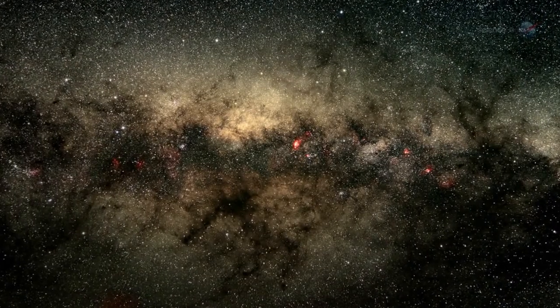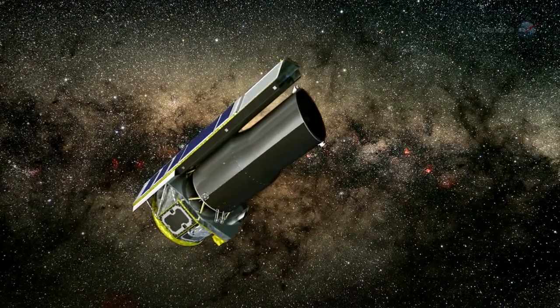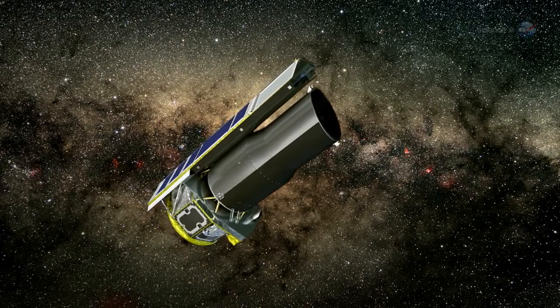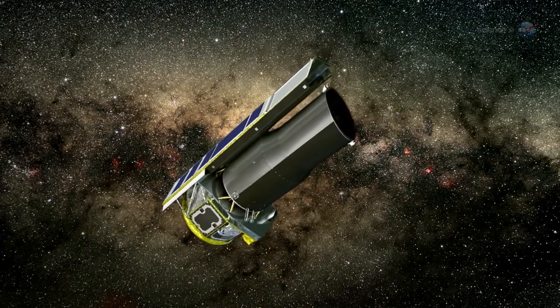A team of more than 35,000 amateur scientists have been looking through images taken by NASA's Spitzer Space Telescope and they have discovered more than 5,000 bubbles in the disk of our galaxy.